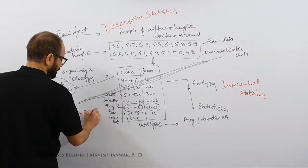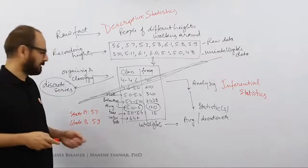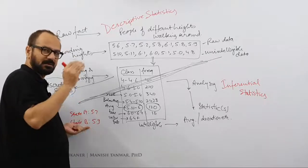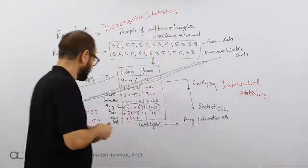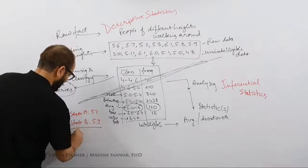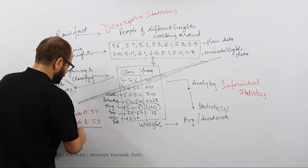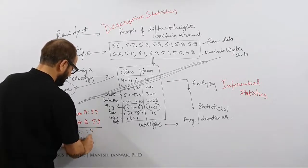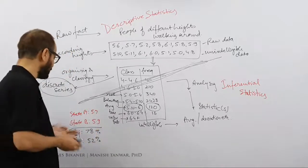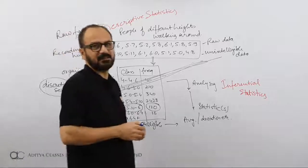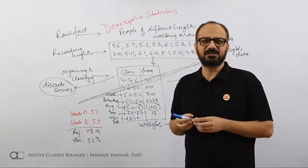Then what does this mean? If I have average heights of two states, let's say average height of one state is 5.7 while the average height of another state is 5.9, state A and state B. Now I can interpret that on an average people are taller in state B. Now whatever policy decision you wish to take, you can take.